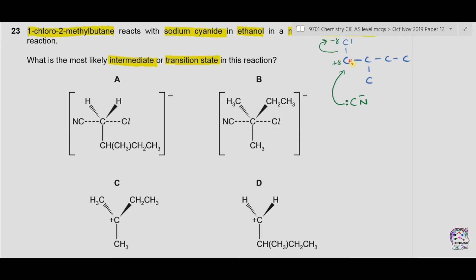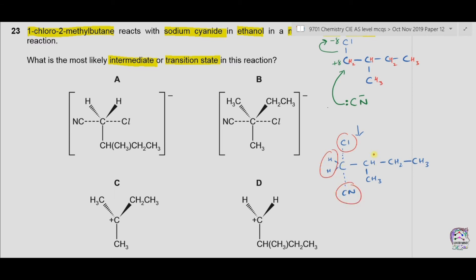The carbon bearing the chlorine also has two hydrogen atoms. The transition state intermediate looks like this: we have CH₂ with the chlorine bond being broken and the CN bond being formed, connected to CH with CH₃, then CH₂ and CH₃. So at this carbon we have one chlorine atom, two hydrogen atoms, one CN, and one alkyl group.